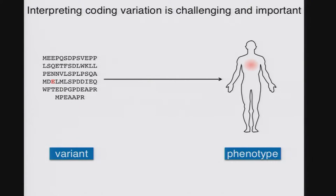We just had a really lovely talk from Daniel highlighting how we can use population-level data to try to infer what a particular variant or a region in a gene might be doing relative to a phenotype that we care about. Genetics in general is concerned with trying to make inferences like this, except that lots of variation that we find in genomes is rare or even private, and in that case we're in trouble if we want to interpret a specific variant, because it's likely that we've not seen that variant ever before.